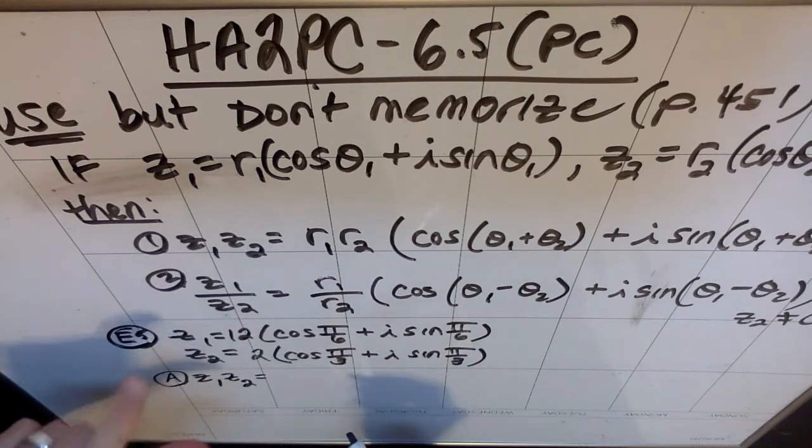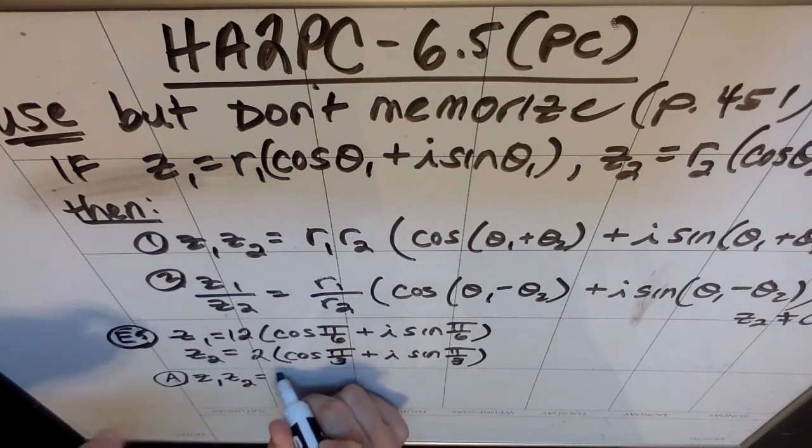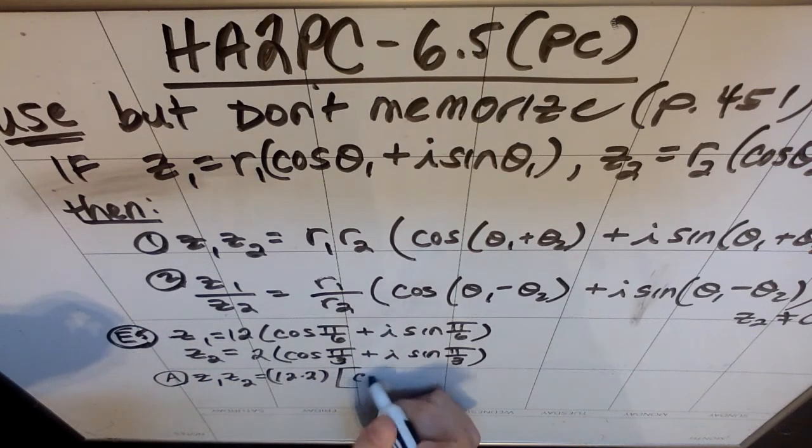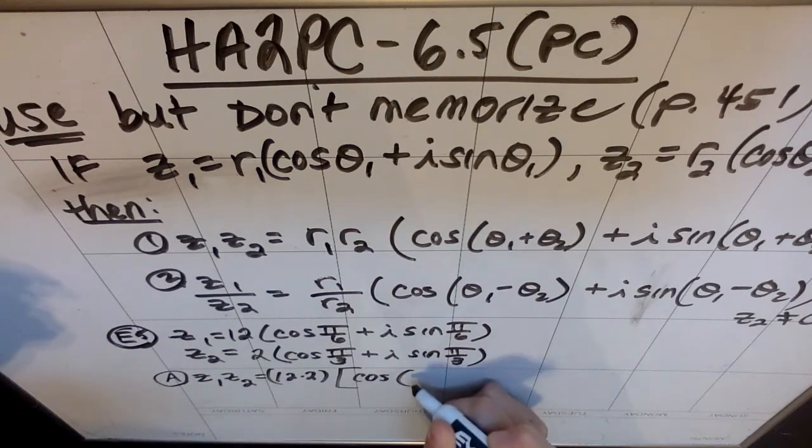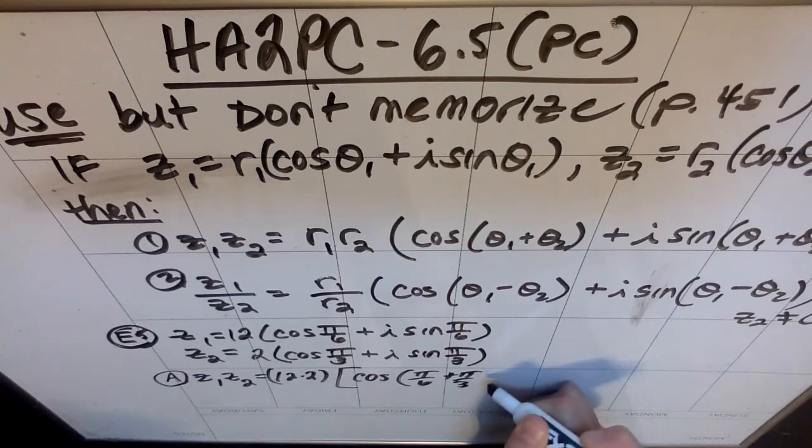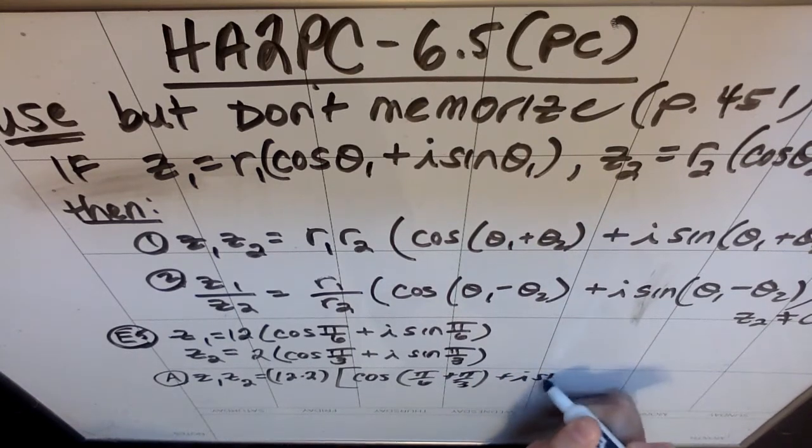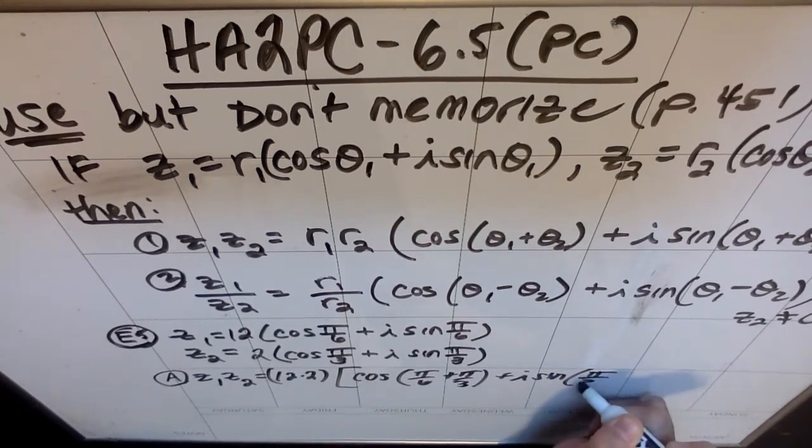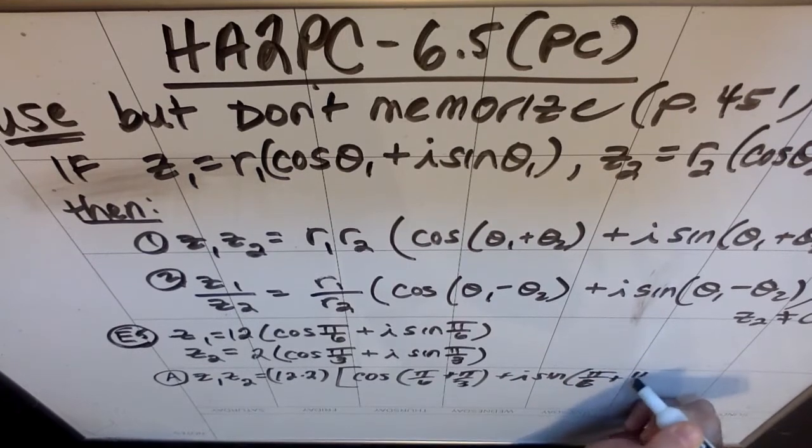So if I wanted to do part a, we're going to do z1 times z2. Well, z1 times z2, I'm going to multiply the r's, so that's going to be 12 times 2. And then I'm going to have cosine of, and I'm going to add pi over 6 plus pi over 3. Plus i sine of, again, pi over 6 plus pi over 3.